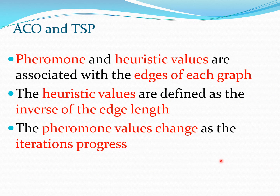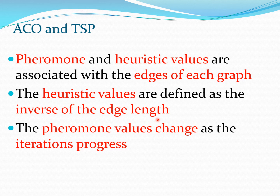Rather than finding solutions through an exhaustive search by exploring all permutations, ACO solves this problem more smartly. There is a pheromone value and a heuristic value linked to each edge of the graph. The heuristic values are defined as 1 divided by the edge length, which ensures that the ants are discouraged from traveling along very long edges. The pheromone value changes as time passes and iterations progress.